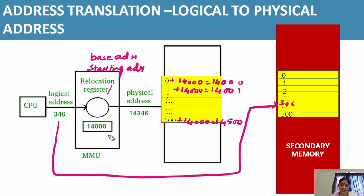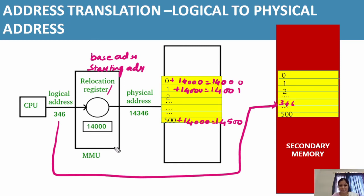Who is performing this task of conversion? It is the task of the memory management unit, and the memory management unit is a part of the operating system. As I have already told you, the operating system is the permanent resident in main memory. So at the backend, it is performing all these memory management tasks.